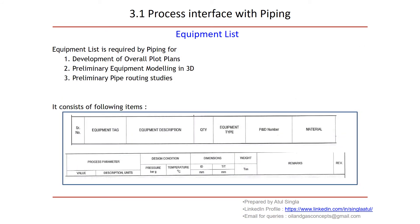The equipment list is required by piping for development of overall plot plan and 3D modeling and training studies. The various items listed in the equipment list include: equipment type, number, equipment description, quantity — suppose there are two pumps, quantity will be two — equipment type, P&ID number, material, process parameters, design conditions, dimensions, weights, and some remarks. At the initial stage of the project, this becomes a very important document to start equipment layout.